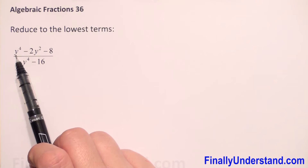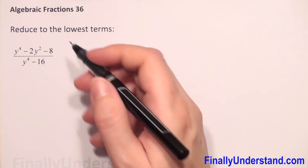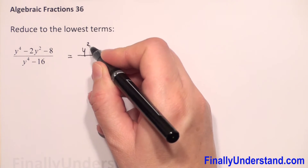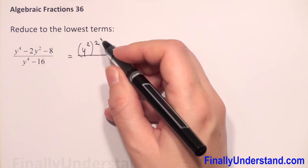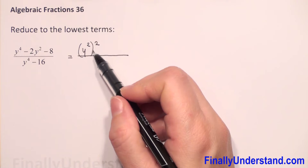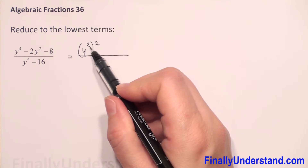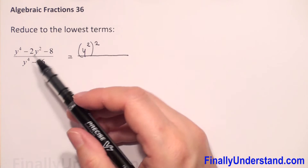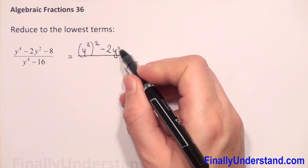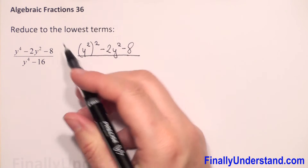We have in the numerator y to the fourth power minus 2y squared. I will rewrite y to the fourth power as y squared to the second power. This is from the property of exponents — when we have y squared to the second power, we multiply the exponents: 2 times 2 is 4. So it's exactly the same as what we have at the beginning. The rest we will copy: squared minus 8.